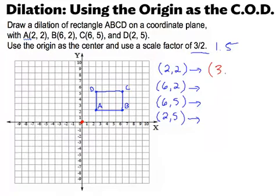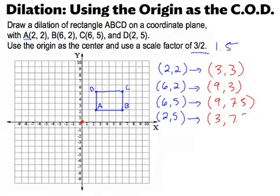So 2, 2 will become 3, 3. Multiply each number by 1.5. 6, 2 will become 9, 3. 6, 5 will become 9, 7.5, and 2, 5 will become 3, 7.5. And now I have my four points of my new image. So let's just plot those points. 3, 3 is here. 9, 3 is here. 9, 7.5. And recall the notation we use for a transformation is that this point would be called A prime, B prime, C prime, and D prime. And that is how we can do a dilation when the origin, the point 0, 0, is used as our center of dilation. It's very nice.